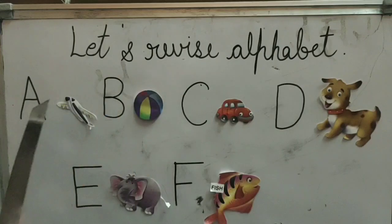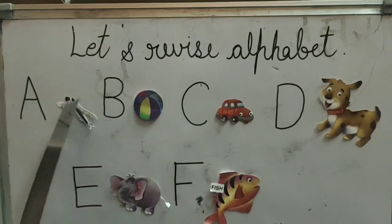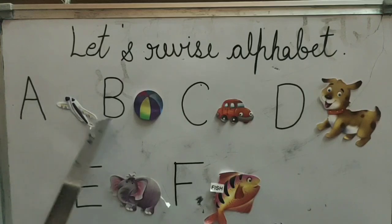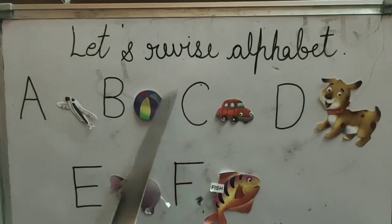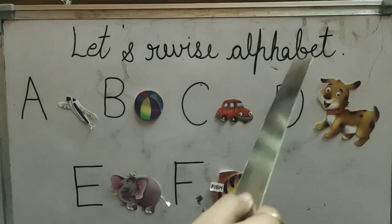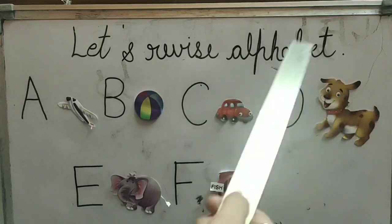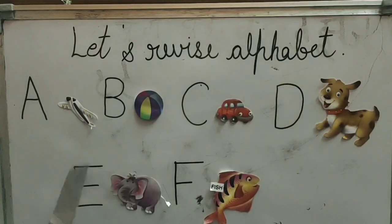Again. A for aeroplane, A for aeroplane. B for ball, B for ball. C for car, C for car. D for dog, D for dog. E for elephant, E for elephant. F for fish, F for fish.